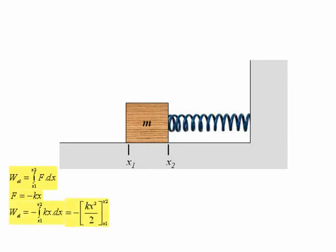Therefore, the work done is equal to the integral from x1 to x2 of minus kx dx, which evaluating the integral gives us minus kx squared over 2 from x1 to x2, which finally gives us kx1 squared over 2 minus kx2 squared over 2.